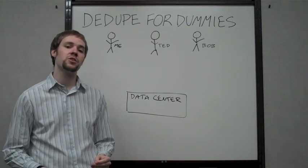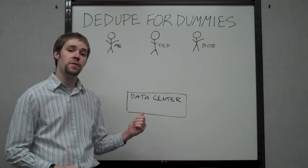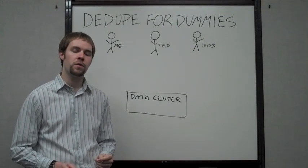There are two main types of deduplication: file-level deduplication and block-level deduplication. I'm going to show you the difference between the two and why block-level deduplication is much more powerful and efficient.